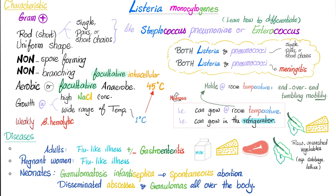Now to the diseases. Adults will have flu-like illness, plus or minus gastroenteritis — nausea, vomiting, diarrhea, etc. Pregnant women will have flu-like illness. In neonates, this is very high yield: granulomatosis infantiseptica, which can lead to miscarriages, disseminated abscesses, and granulomas all over the baby's body. Granulomatosis infantiseptica, sepsis, meningitis, and death.